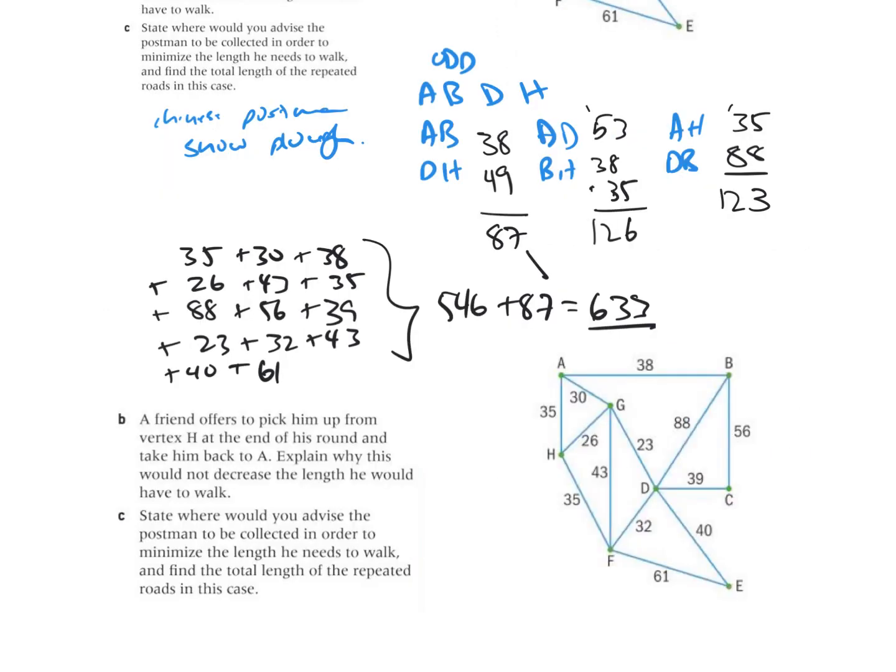Now if we look at part B, it says a friend offers to pick them up from H at the end of round and take them back to A. So in essence what that's doing is it's actually adding an extra loop here of length 0.